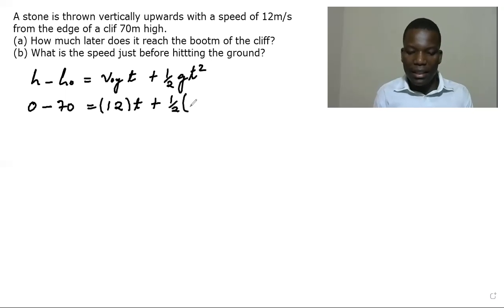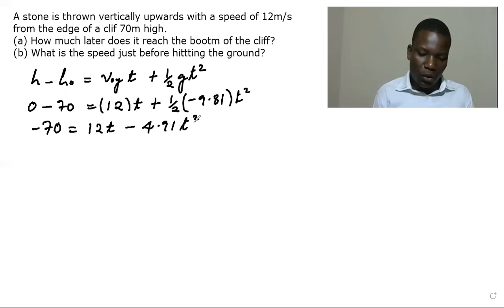And we are looking for time and then we have plus half and this is a freefall. So we are going to have negative 9.81 as our gravitational acceleration times t squared. So here we're going to have negative 70 equals 12 t minus 4.91 t squared.